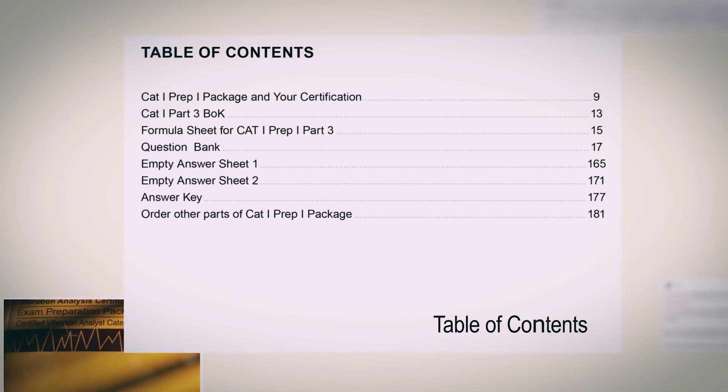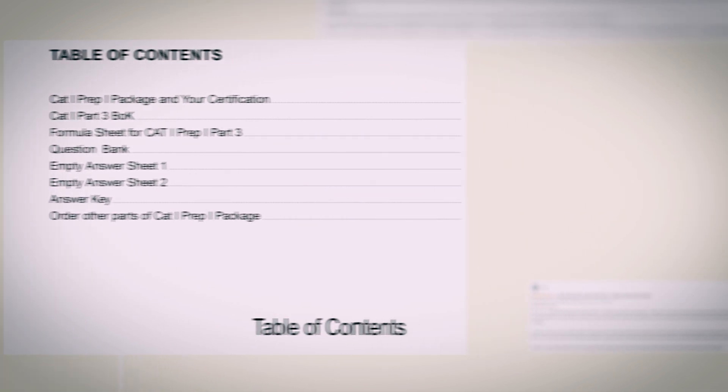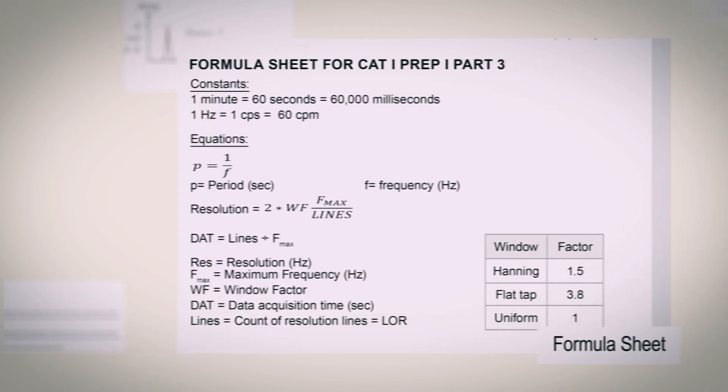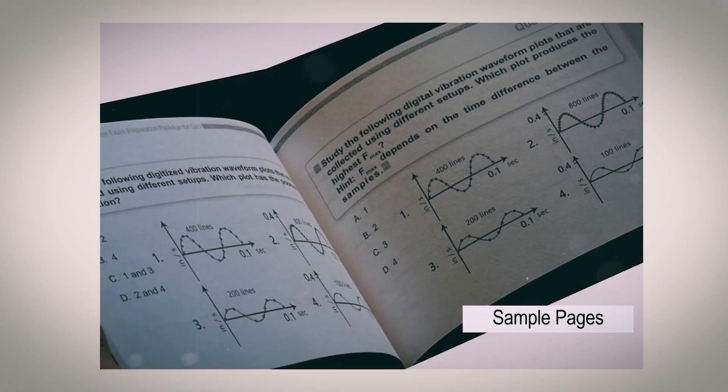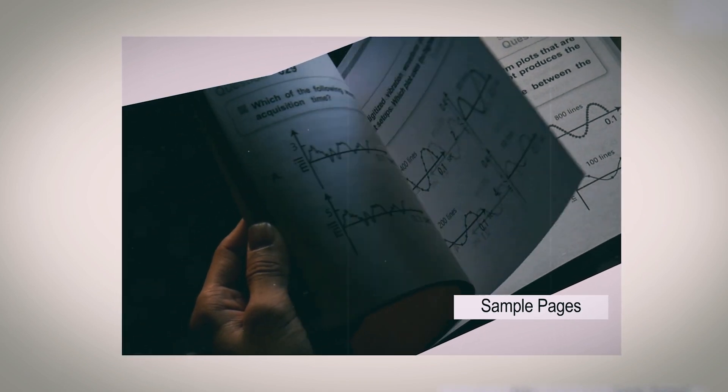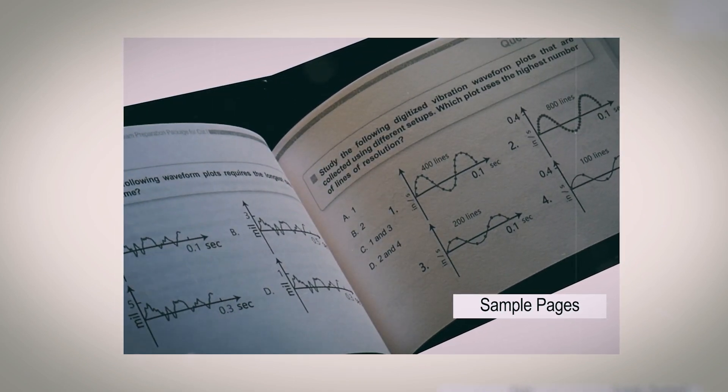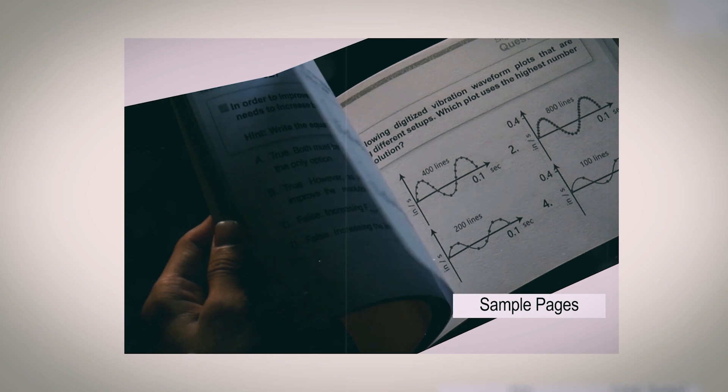Book 3, like other parts of the series, includes a formula sheet useful for calculations and a question bank. Here are samples of the questions and plots. This book contains 133 questions with their correct answers.